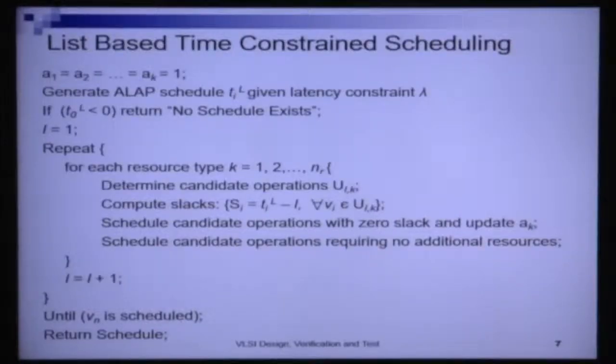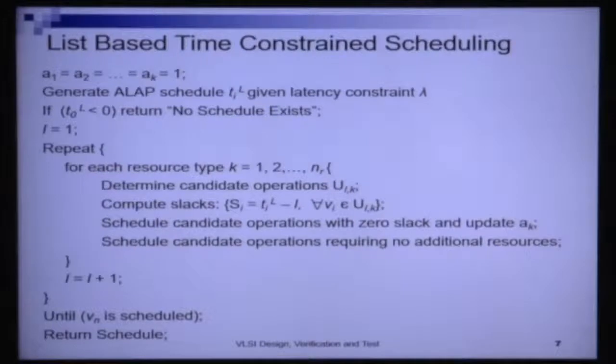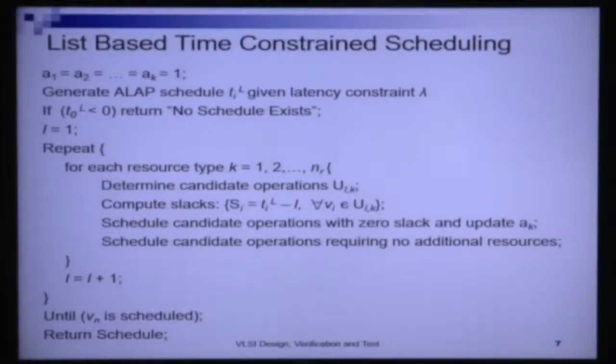However, the priority function for resource constraint scheduling was the weight of the longest path — the critical path — from a given node to the sink node. In resource constraint scheduling, we had to minimize time given a bound on resources. Now here, the priority function will be slightly different. The priority function here is defined by the computation slack available to a node with respect to the latest valid start time that it has. We find the latest valid start time using the ALAP scheduling methodology. Given the ALAP scheduling methodology and the current time step, we can find the computation slack as T_iL minus the current time step L.